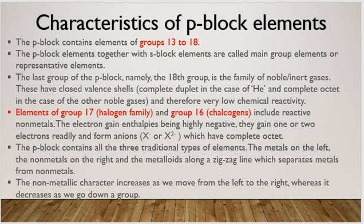These elements have very low reactivity. And the elements of group 17 is called halogen family. Group 16 is called chalcogens. And these are quite reactive non-metals. The electron gain enthalpy being highly negative, they gain, they used to gain two electrons readily to form anions. Chalcogens used to gain two electrons and halogens used to gain one electron. They have complete octet after taking up the electron accordingly.